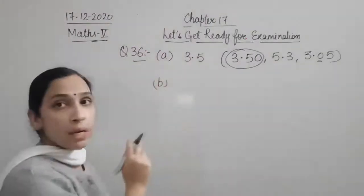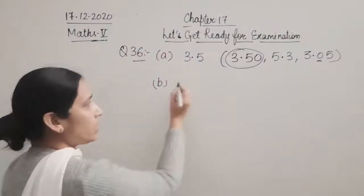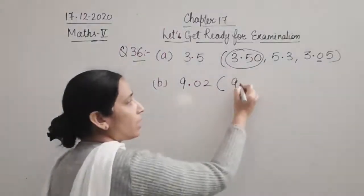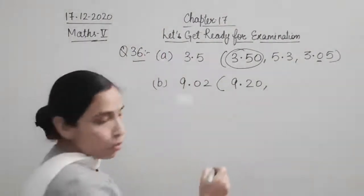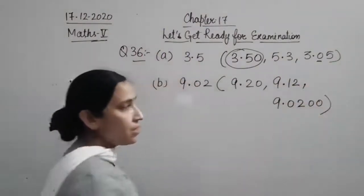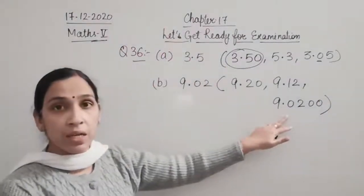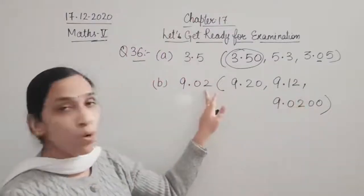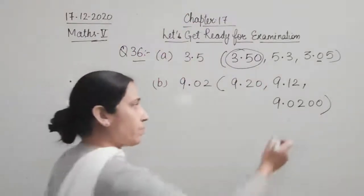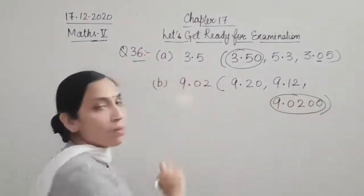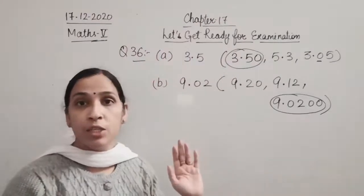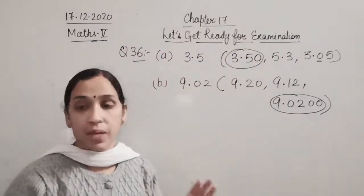Now part B: 9.02 — choose the correct option from 9.20 and 9.02. Here, after 0.02 you can add zeros after the last digit. After the decimal, whichever numbers you have, after that number you can add as many zeros as you want and the value remains the same. So the correct equivalent is 9.020, same as 9.02.